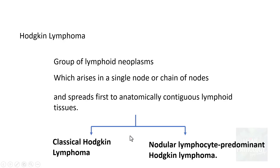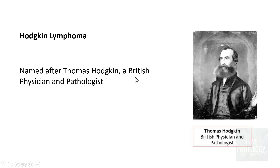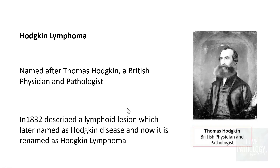It is categorized into two different forms: one is called Classical Hodgkin Lymphoma, and another is Nodular Lymphocyte Predominant Hodgkin Lymphoma. The name Hodgkin for these lymphoid neoplasms is after Thomas Hodgkin, who was a British physician and pathologist. Way back in 1832, he described a lymphoid lesion which later came to be known as Hodgkin disease, and now it is known as Hodgkin Lymphoma.